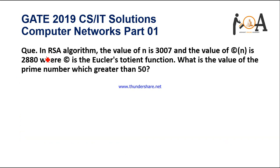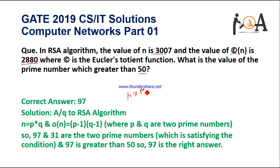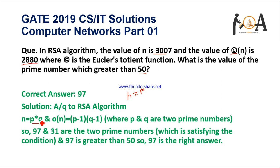The next question: in the RSA algorithm, the value of n is given as 3007 and the value of θ(n), the Euler's totient function, is 2880. What is the value of the prime number greater than 50? In RSA, n = P × Q where P and Q are prime numbers, and θ(n) = (P−1)(Q−1). We have n = 3007 and θ(n) = 2880, and we need to find P and Q.